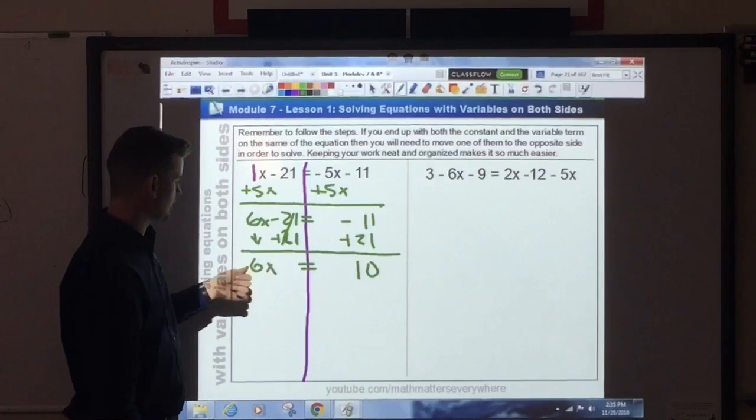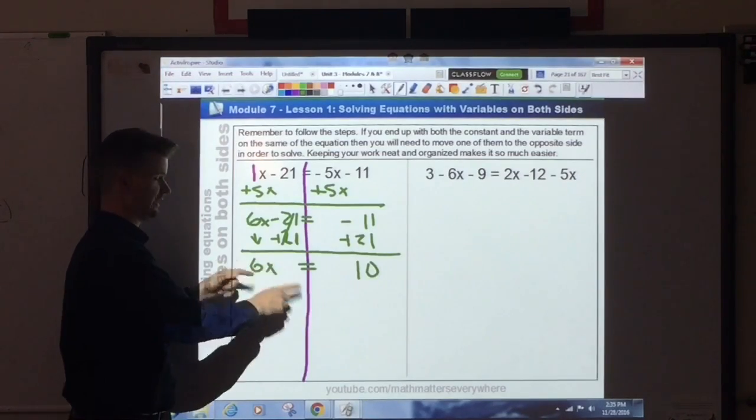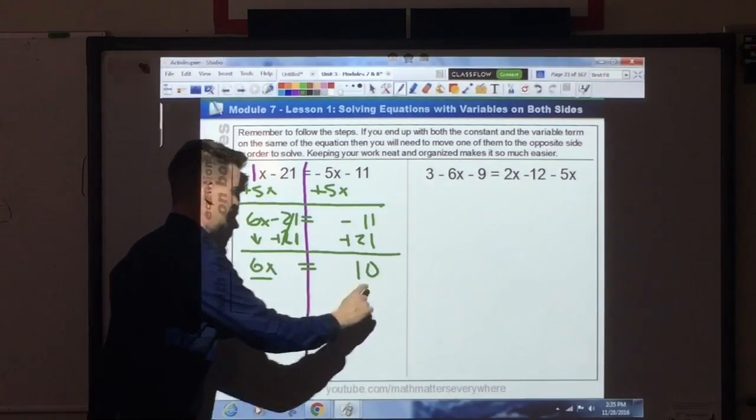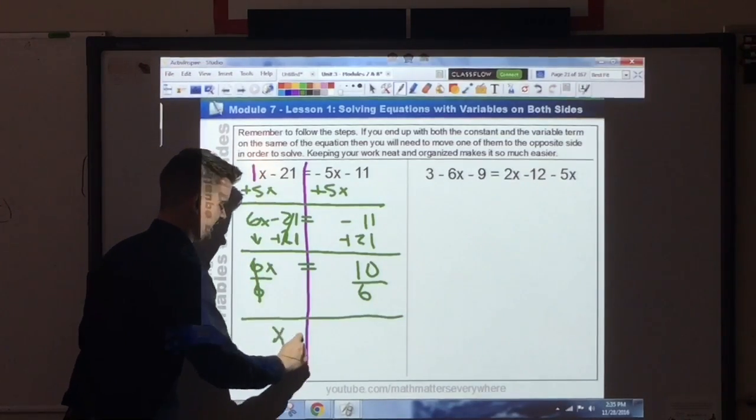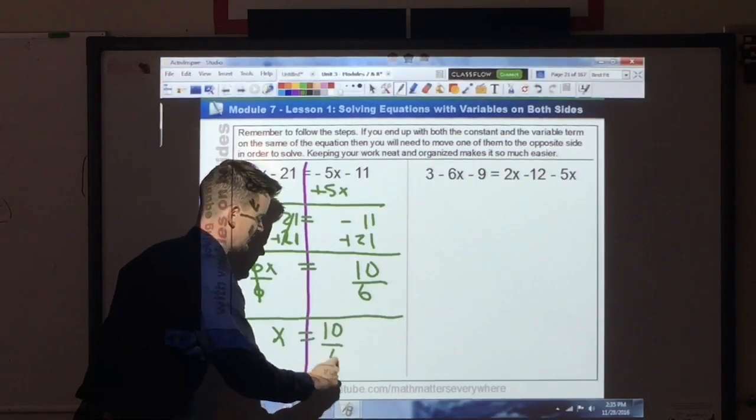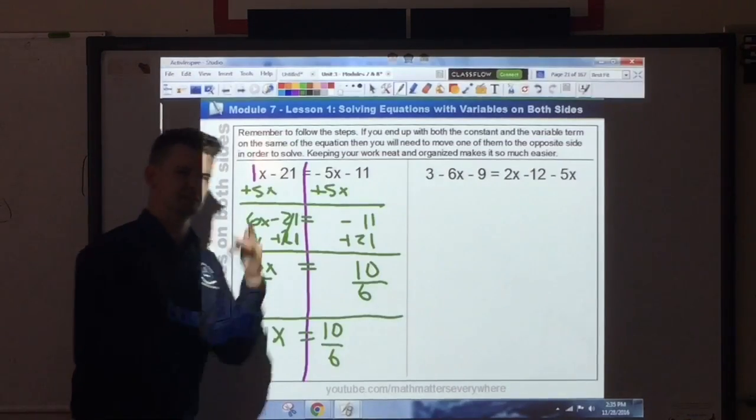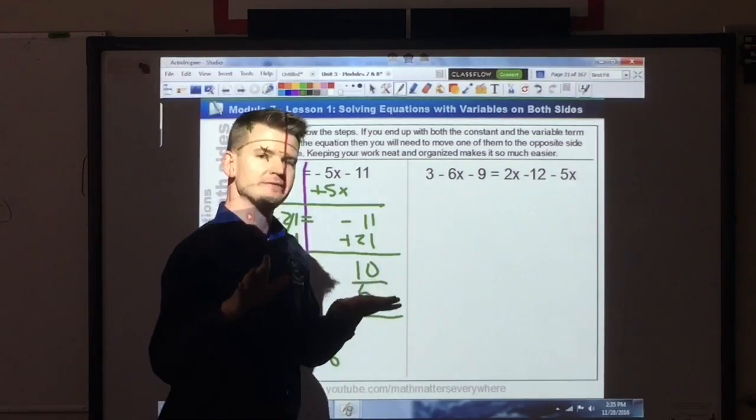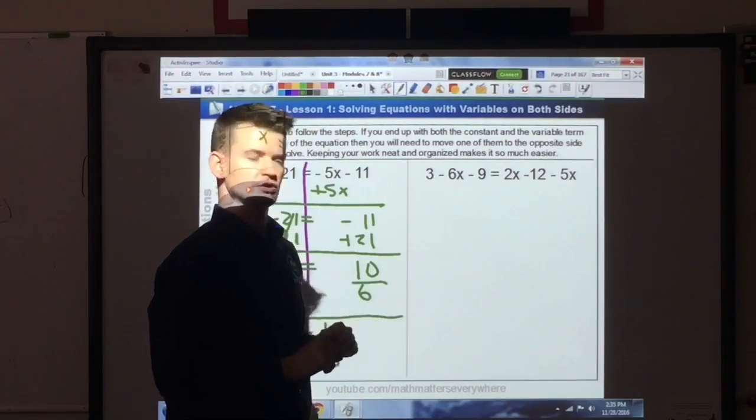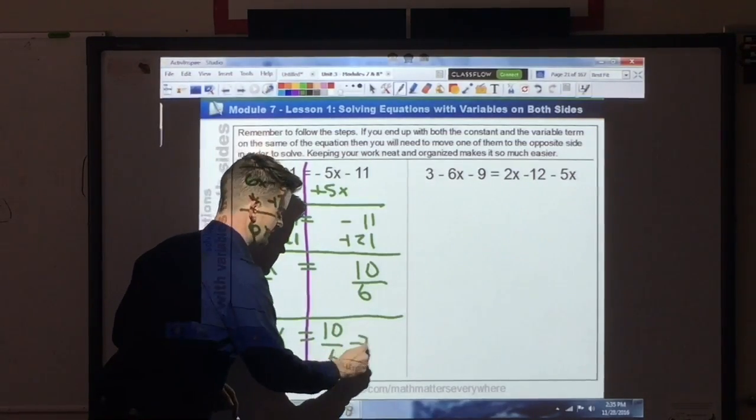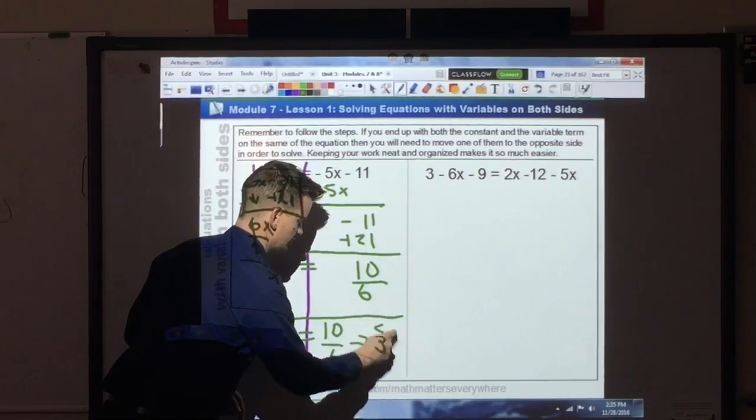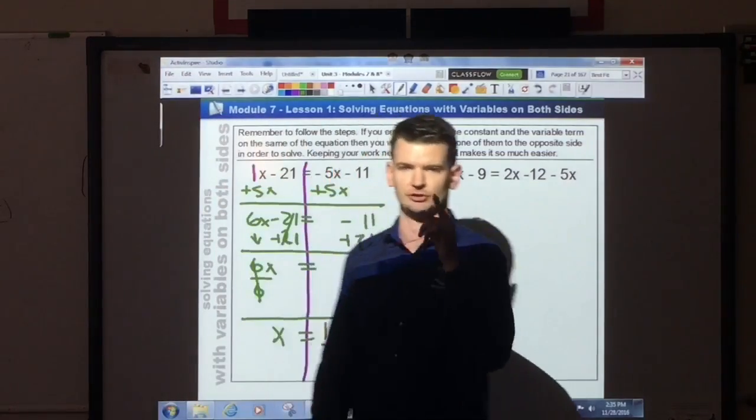Now I need to divide out this coefficient. That's multiplication, the opposite is division. I divide both sides by my coefficient, which is 6. Those will cancel. I get x is equal to 10 over 6. Can I simplify that? Yes, I can. The greatest common factor is 2. So I'm going to divide the numerator and denominator by 2. And this simplifies down to 5 thirds. So x equals 5 thirds.